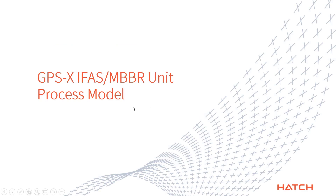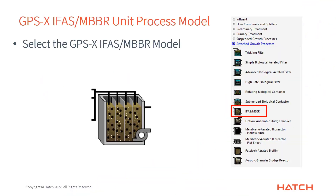Now let's move on and talk about the IFAS MBBR unit process model itself. If you go to the attached growth processes menu, you'll see many of the other objects I mentioned, including the IFAS one. For long-time GPSX users, we used to call it the hybrid model — hybrid meaning a combination of suspended growth and attached growth — but we moved to calling it IFAS quite a few releases ago, as it's a little more accurate.